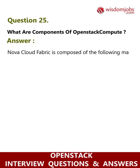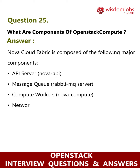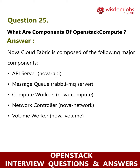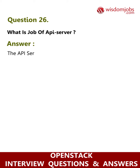Question 25: What are the components of OpenStack Compute? Answer: Nova cloud fabric is composed of the following major components: API server (Nova API), message queue (RabbitMQ server), compute workers (Nova Compute), network controller (Nova Network), volume worker (Nova Volume), and scheduler (Nova Scheduler).